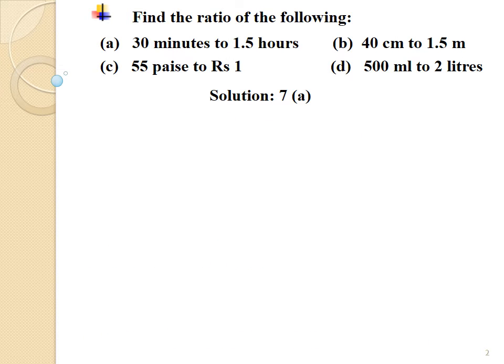Exercise 12.1, question number 7: find the ratios of the following. Students, in this question we have to find out the ratio for each and every sub-question. But in this question, the units are not the same. So, before finding out the ratios, we have to compulsorily convert one unit to another unit, in order to get the same unit without affecting or changing its value.